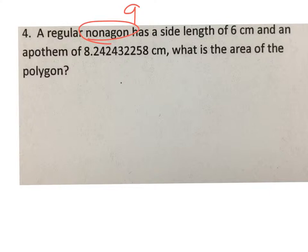So we have a nine-sided polygon with a side length of six and an apothem of 8.242432258. What's the area?